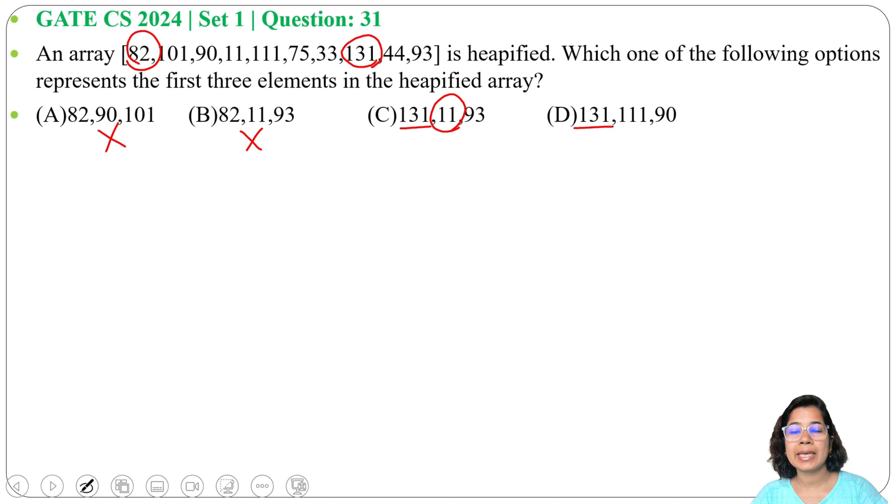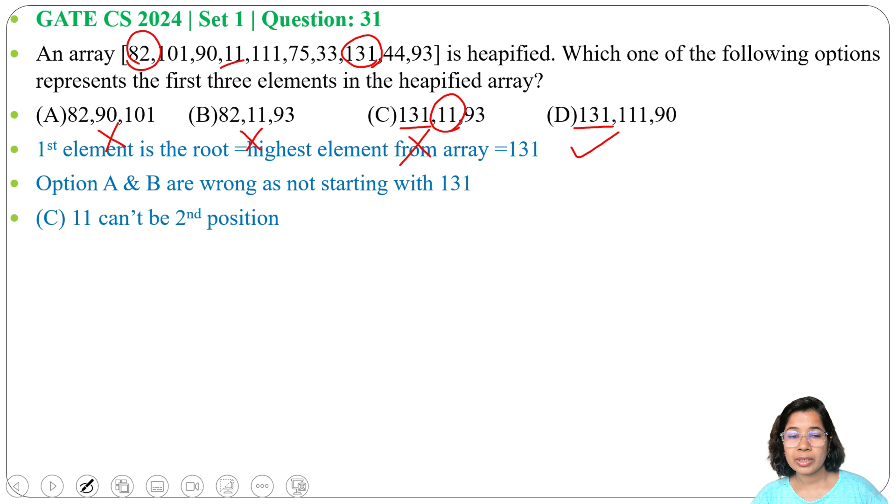In option C, 11 is the second element. Here, 11 is the least element - it should be in last level. It cannot come as child of root, so option C is also wrong. Answer will be option D.